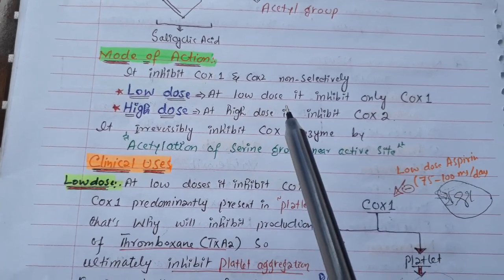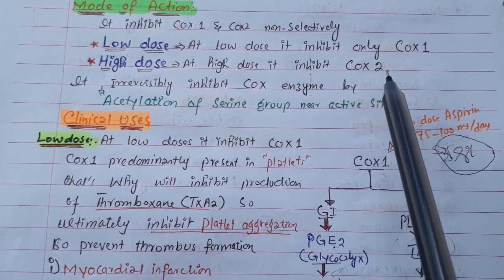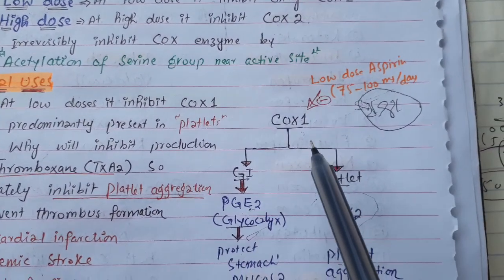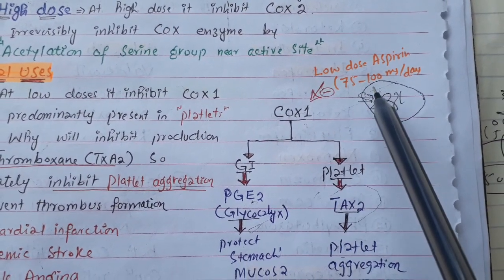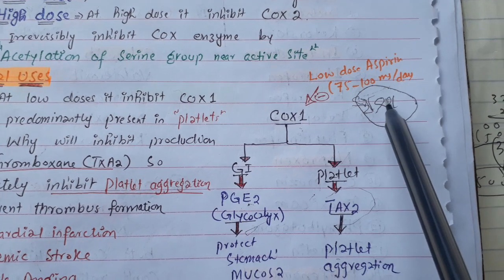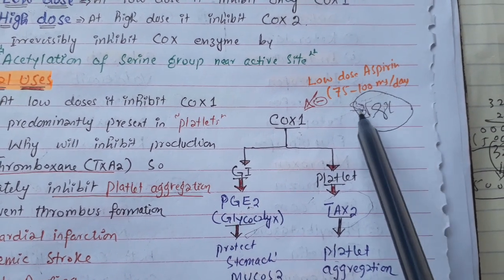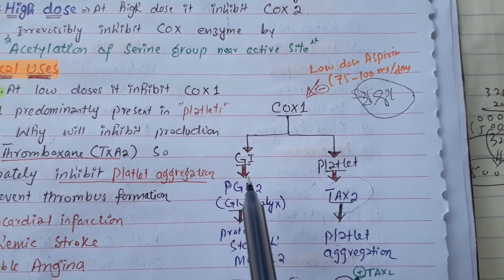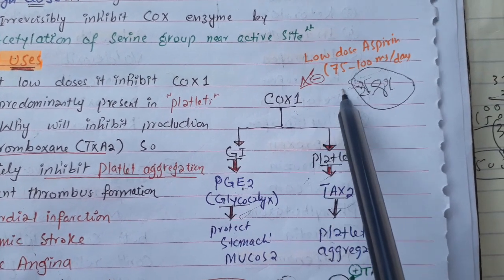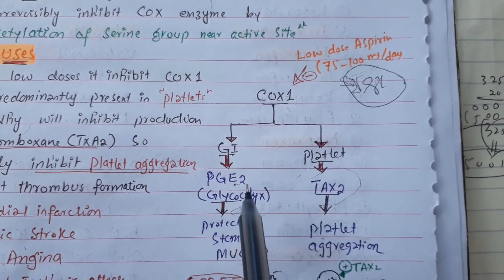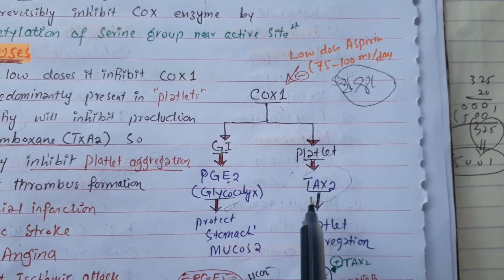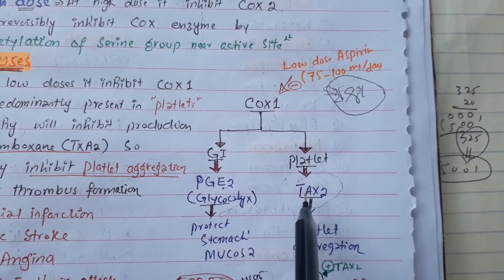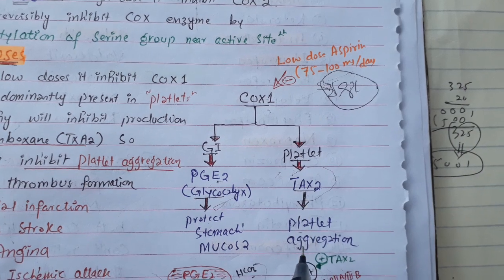At low doses, aspirin inhibits only COX-1. The low dose range is 75 to 100 mg, but the most commonly prescribed low dose is 81 mg per day. COX-1 is predominantly present in platelets. Normally, COX-1 in platelets produces thromboxane, which causes platelet aggregation.